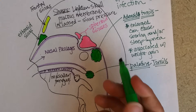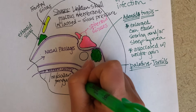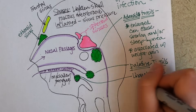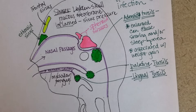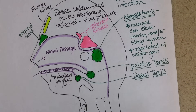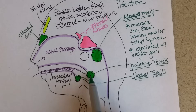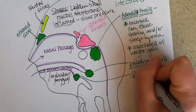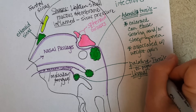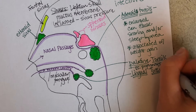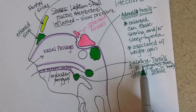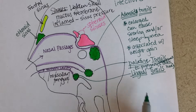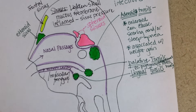There are also lingual tonsils, tucked down on either side at the back of the tongue. Palatine tonsils are commonly removed in kids if they get very enlarged from repeated strep throat. This can be a haven for Streptococcus pyogenes — a bacteria that causes strep throat. Sometimes it colonizes the palatine tonsils; it could colonize any of them, but this seems to be the magnet for them.